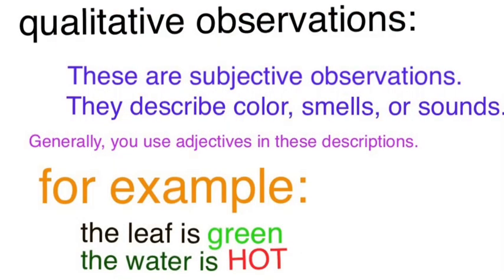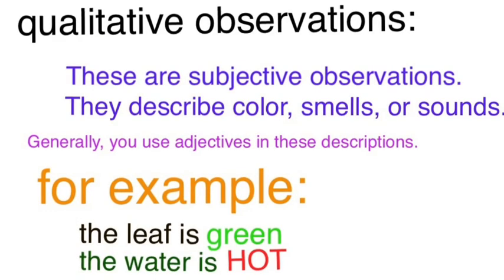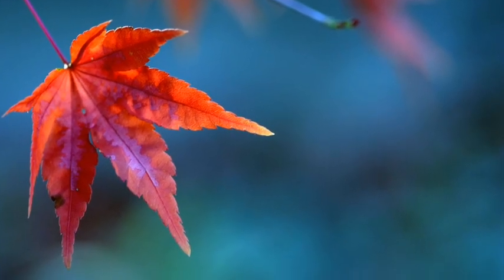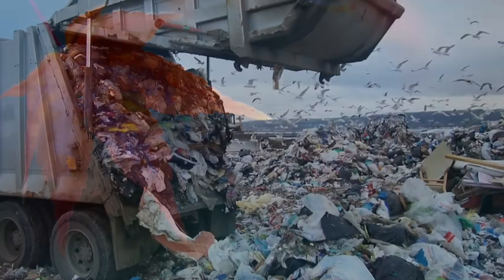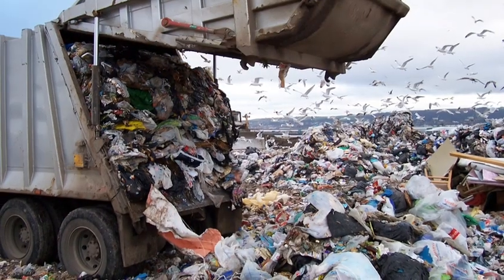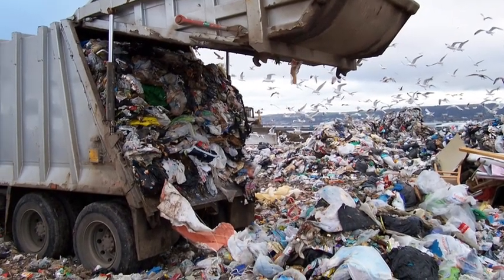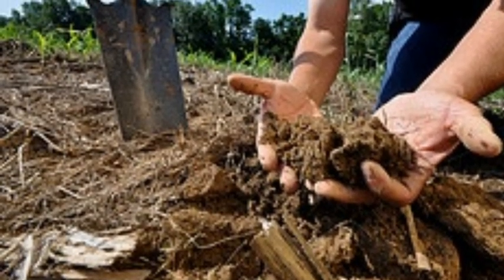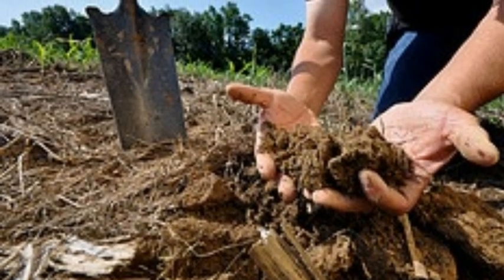Starting with qualitative, these are very subjective — they describe colors, smells, or sounds. We say things like the water's hot, the tree is tall, or it smells bad. For example: the leaf is red, the garbage really stinks, or the soil is warm in my hands. Those are all qualitative observations. They're not precise, but they describe something.